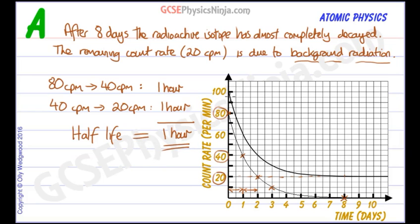Note that if you try to do this with the original data it will all go wrong and you won't get the correct half-life. So you must subtract the background radiation first, then plot on the graph — or subtract it from data given in a table or on a graph, as we've done here.